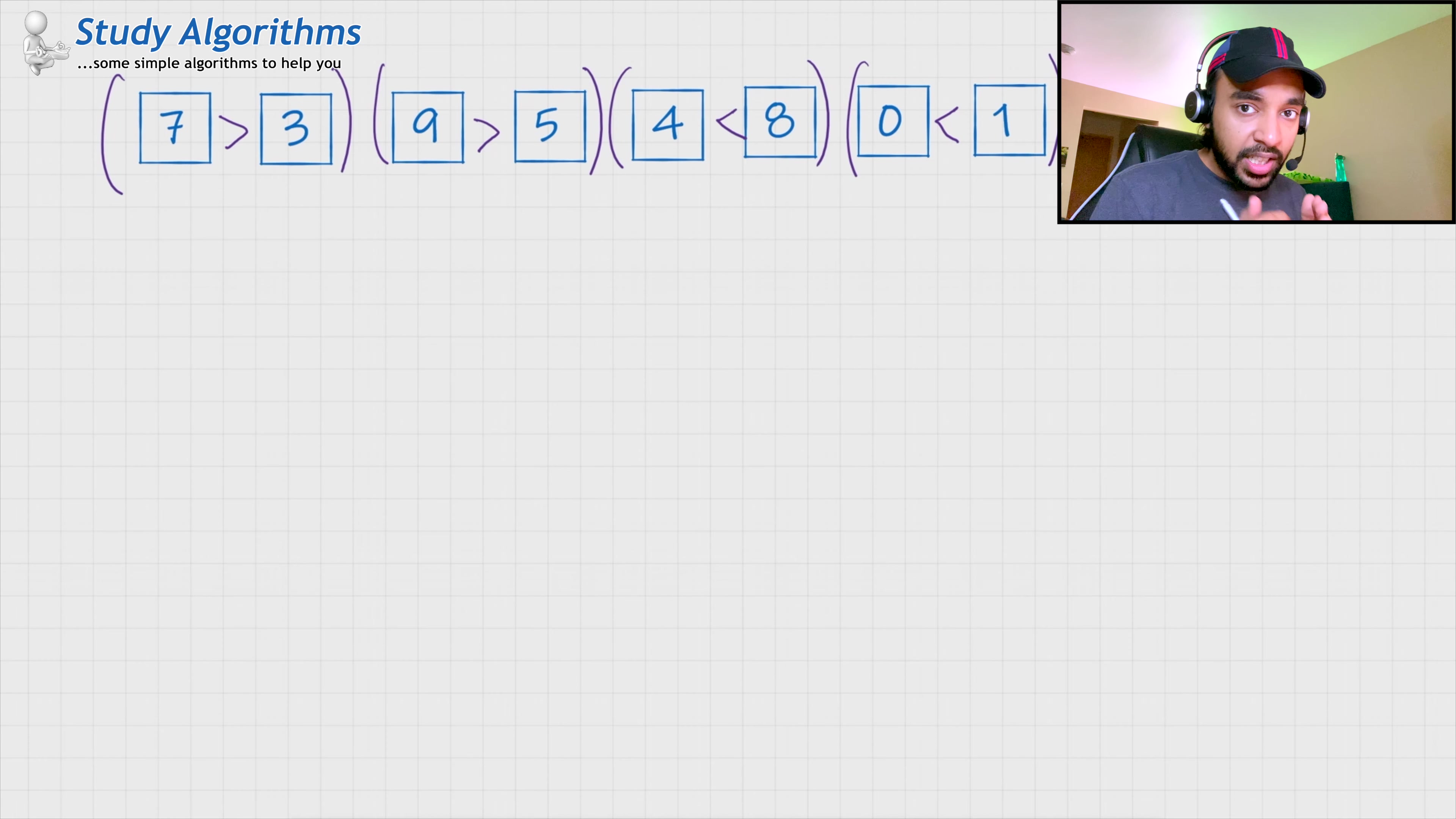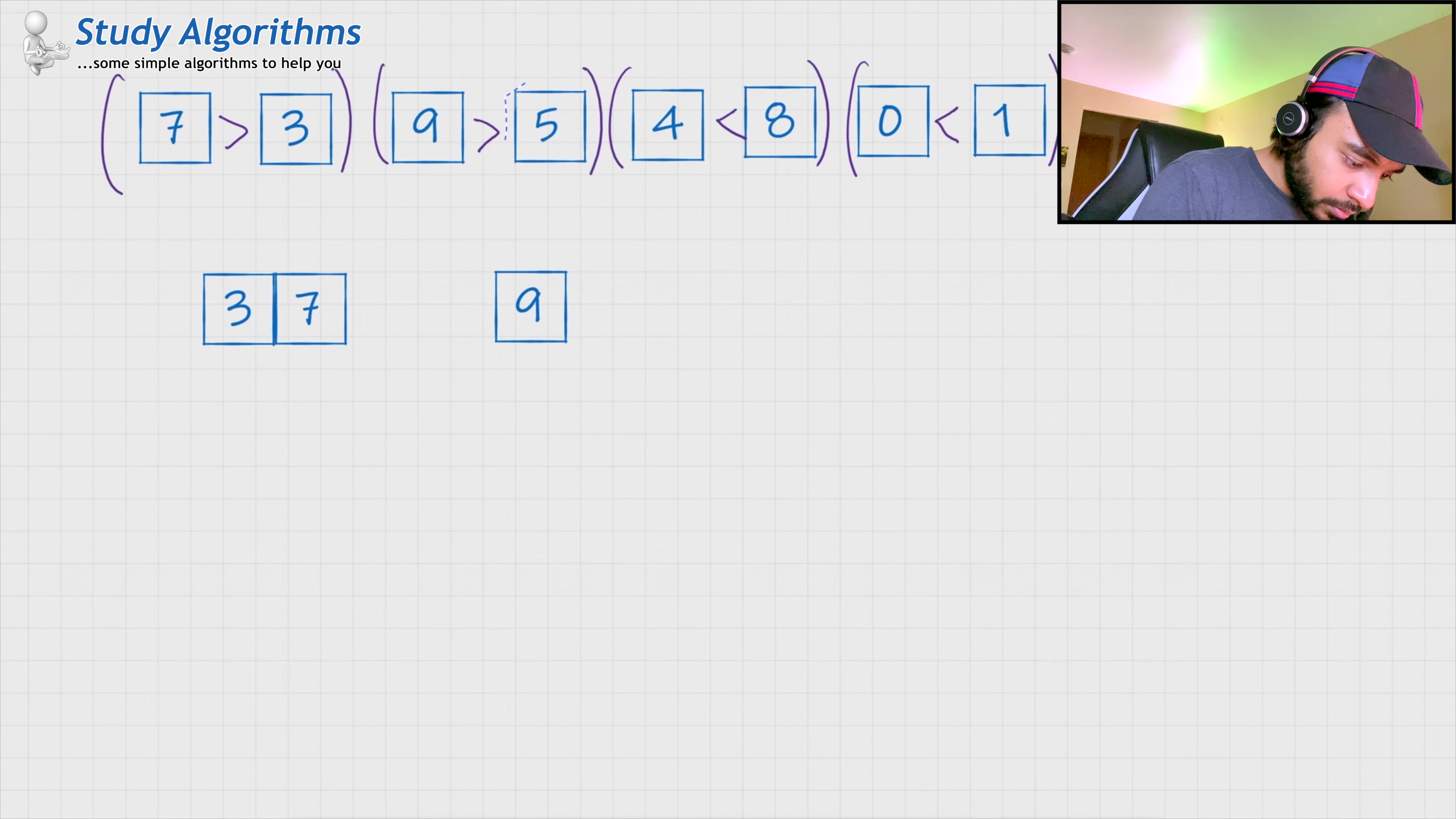So, when I place 3 and 7, they would become something like. So, you see, a very tiny part of our array just got sorted. 3 and 7 are now in a sorted order. Similarly, I can solve 9 and 5 and they would become. Once again, a very tiny part of the array has been sorted. Similarly, I would be solving the two more remaining parts.